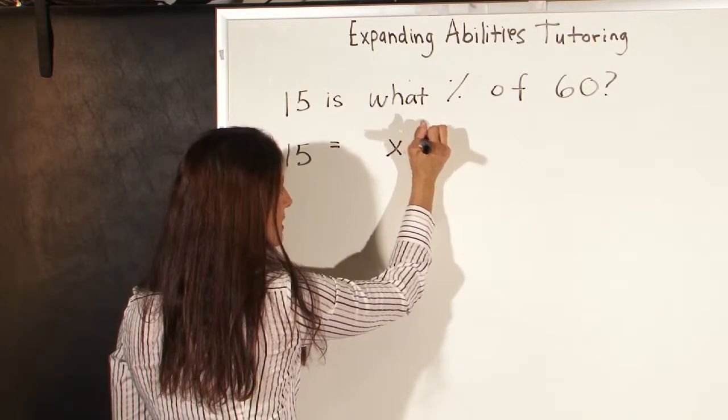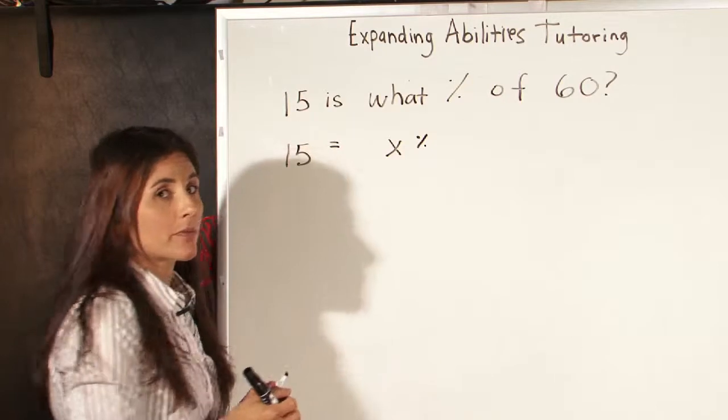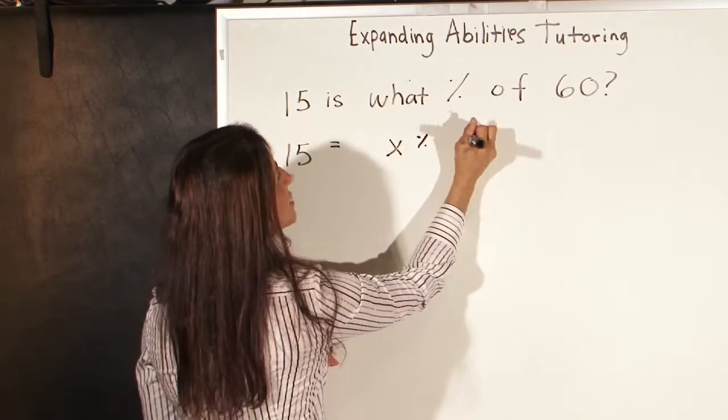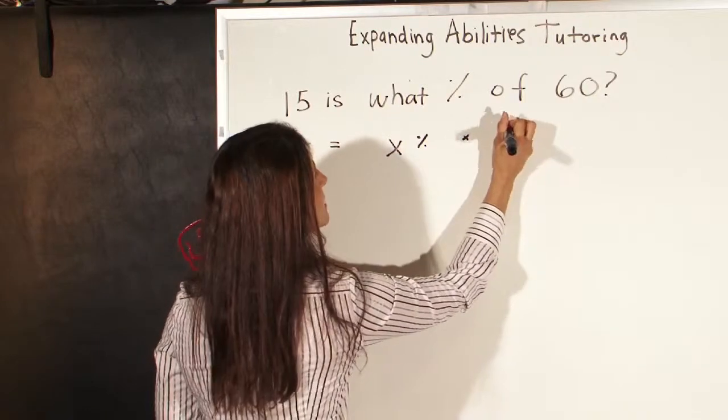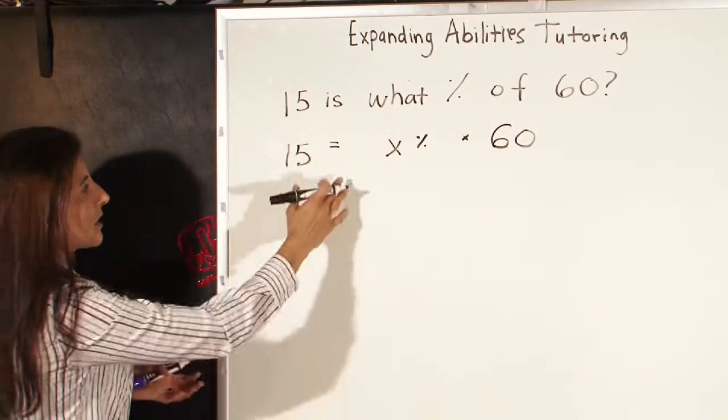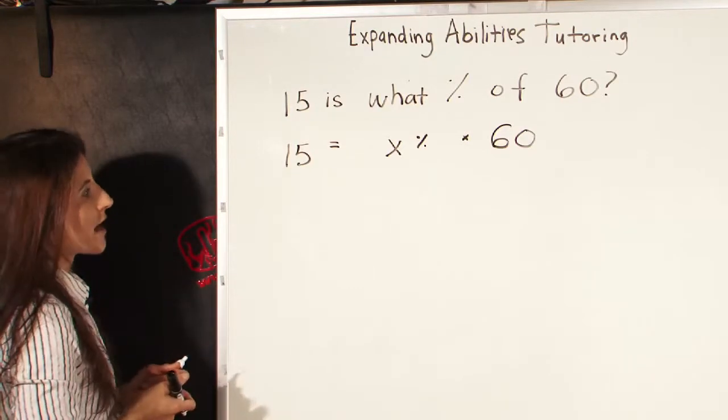And this time, it's going to be a percent, so I'm just going to put x percent so we remember that it's a percentage. Of means multiplication, and 60, again, is a number. So now we have the equation 15 equals x percent times 60.